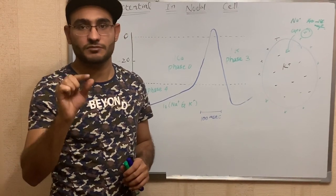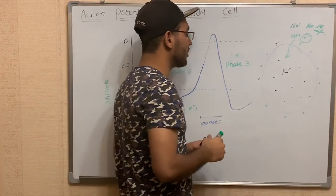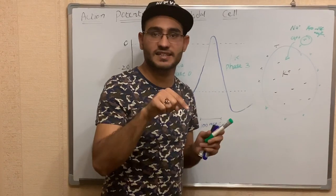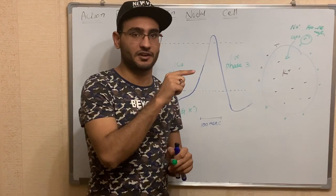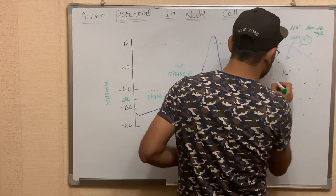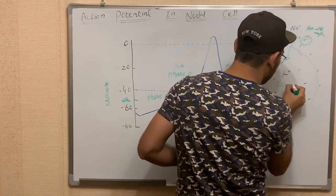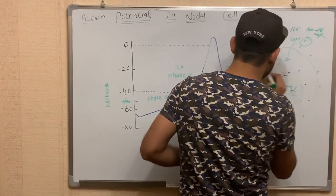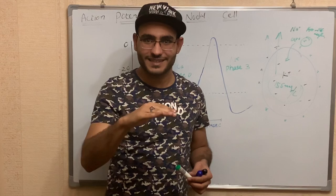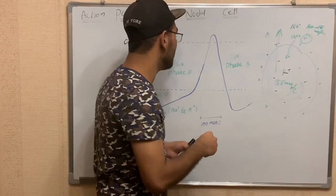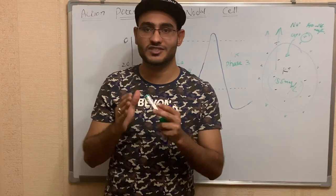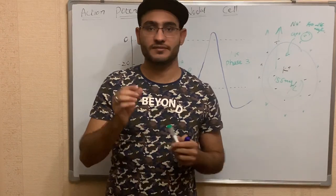When the potassium channels open, according to the electrochemical gradient, potassium is present in high concentration inside the cell membrane — nearly about 150 milliequivalents per liter. So potassium moves from inside the cell membrane to outside. When potassium moves outside, the positivity decreases, and the cell enters the repolarization state — the state when positive charge returns to negative charge.